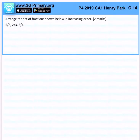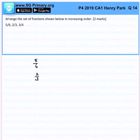Now arrange the set of fractions shown below in an increasing order. The easiest way for us to evaluate the numbers is to make a common denominator. So let's make the denominators 12.